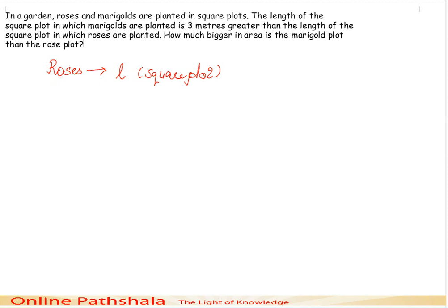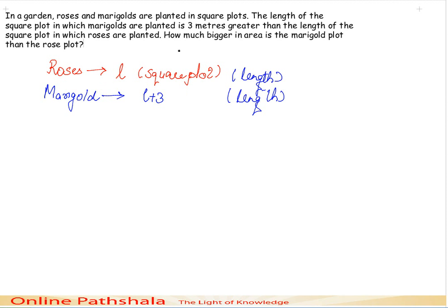For the marigold plot, the length is L plus 3, since it is 3 meters longer than the rose plot. Note that we are talking about only the length, not the area. The question asks how much bigger in area the marigold plot is than the rose plot. By definition, area equals length times length.